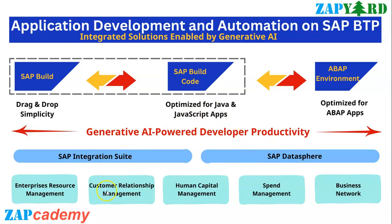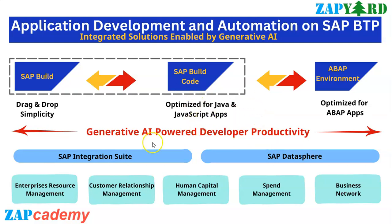The best part is that it can easily integrate with all the backend systems available as part of your customer's landscape — whether you want to get data from S/4HANA, your ERP solutions, CRM systems, or any third-party or cloud solutions such as Ariba or spend management. You can integrate all the various data sources via external services, external sources, or destinations and use them as extensions.